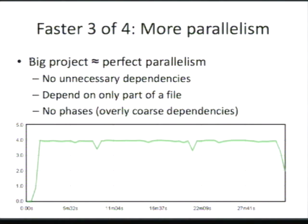The next way we sped up the build system was by getting more parallelism. Often people say there's not enough parallelism because one stage depends on another, but often that's because dependencies are written in overly coarse ways. My experience is that most big projects have near-perfect parallelism, especially if you include steps like documentation generation and building installers — steps that people often segregate into different phases. By removing unnecessary dependencies and using the file-change technique from before — depending only on a subpart of a file — and by not using phases, you can get very good parallelism throughout the whole build.